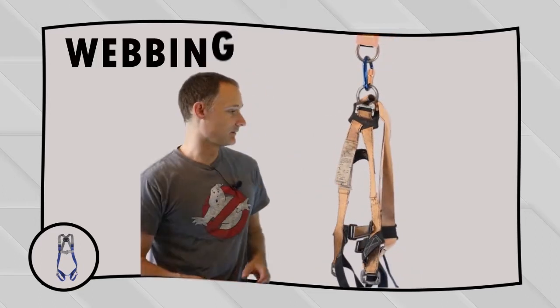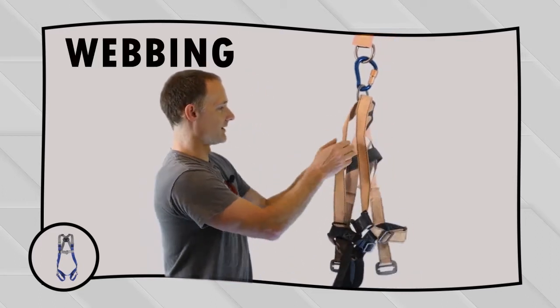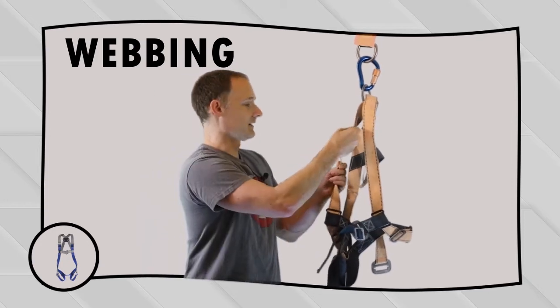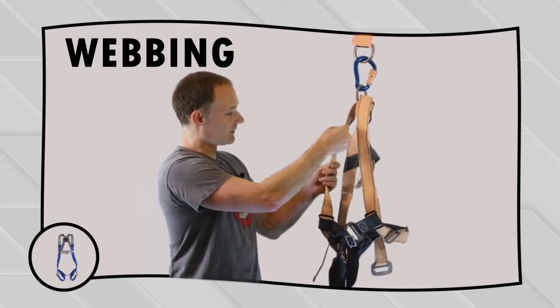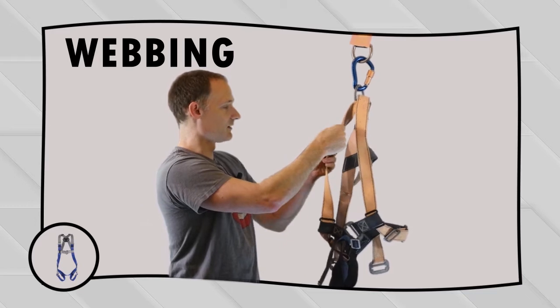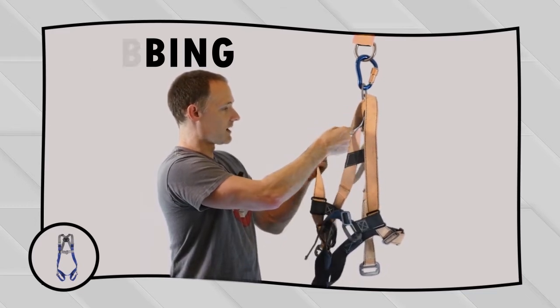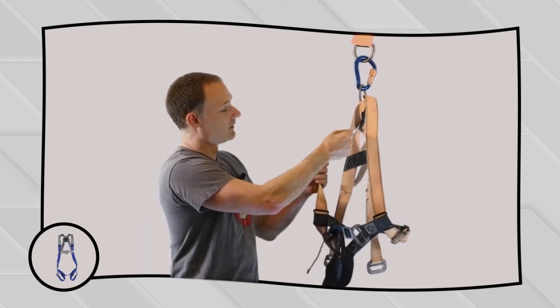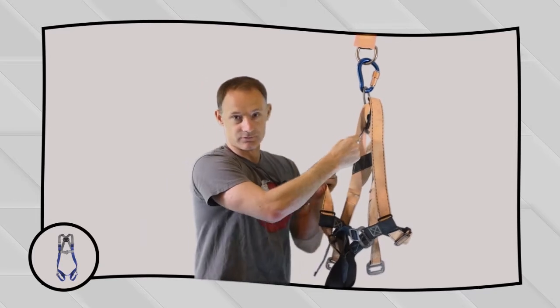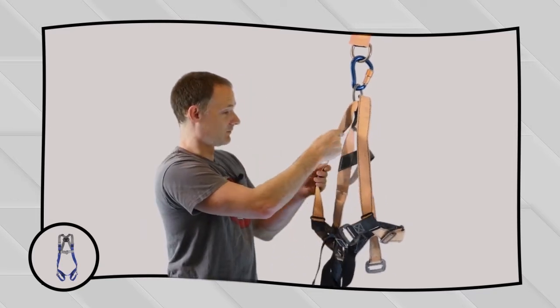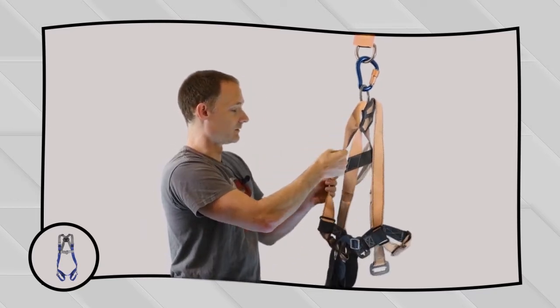So let's check out the webbing on the harness. The first thing you want to do is grab the webbing about six to eight inches apart and bend it. Bending it will allow you to see the damage easier, but it'll also get you a feel for the actual structure of the webbing. Any brittleness that occurred from sunlight exposure or chemical exposure will show up as you bend it and you'll really get a good feel for it.